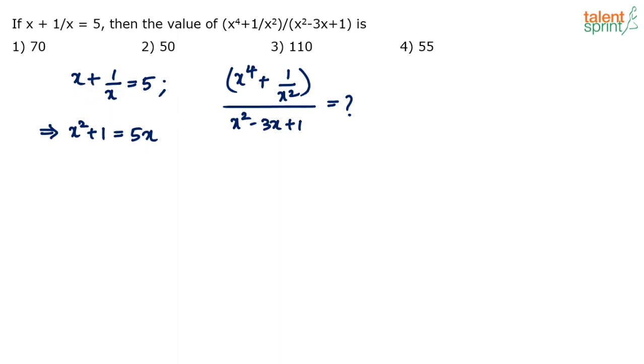x squared plus 1 equals 5x. And if I look at the expression that we need to simplify, I have these terms x squared and 1 in the denominator. So I can replace x squared plus 1 with 5x here. So some simplification. We have not arrived at the answer yet, but there is some simplification. x squared plus 1 equals 5x.